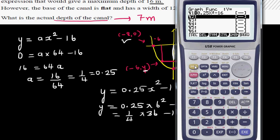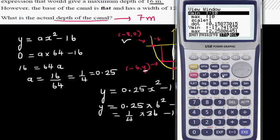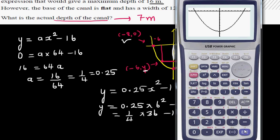And on the y axis, you should have at least up to negative 16. So I have gone from negative 10 to plus 10. And on the y minimum, let's make y minimum as negative 20. That would do.